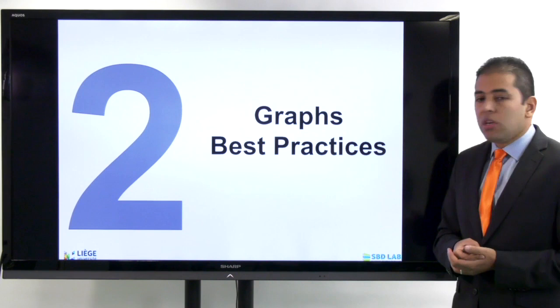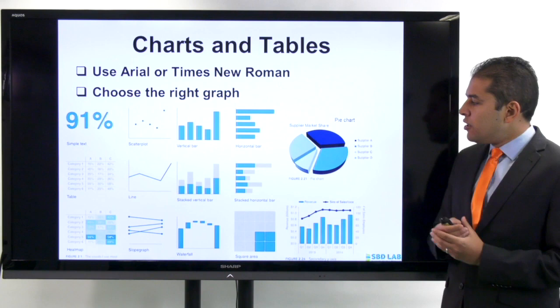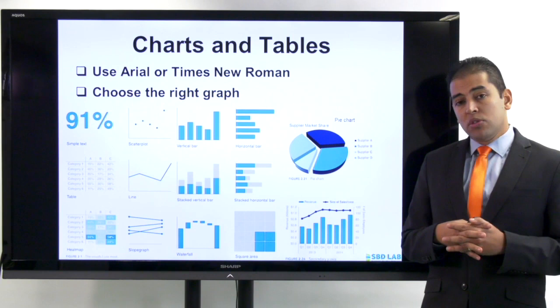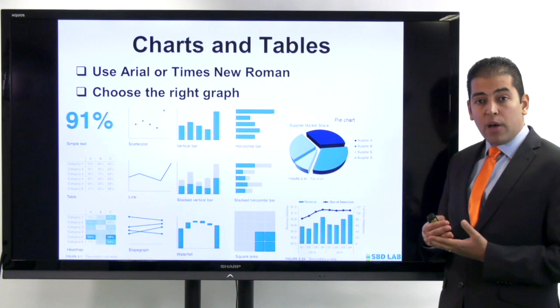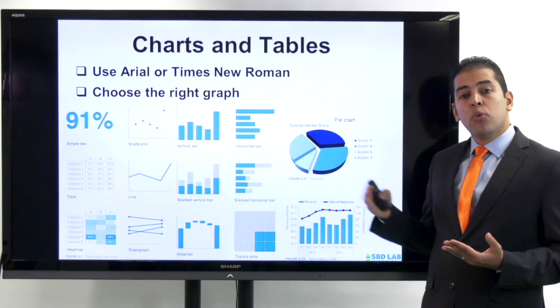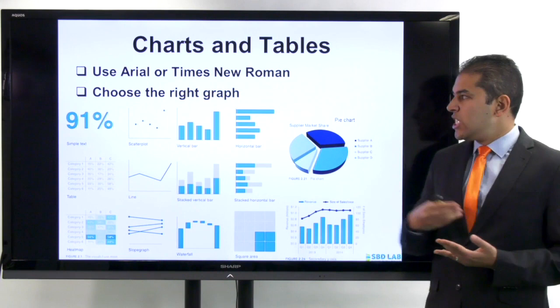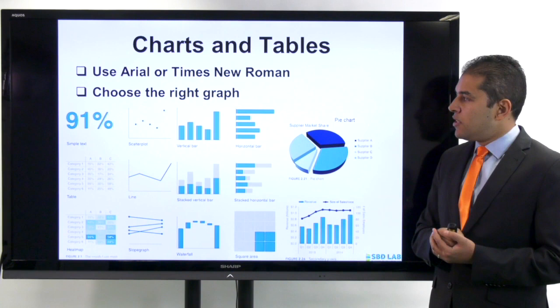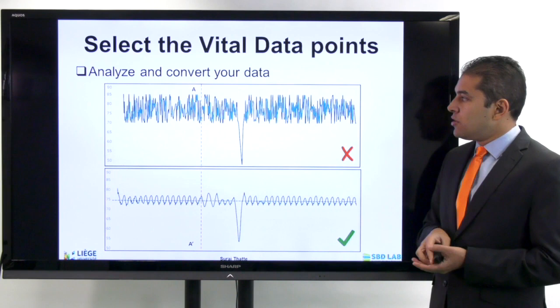What are the best practices when it comes to graphs? We try always to use Arial or Times New Roman — very classical fonts — to make sure that the text is readable and not biased, and we try to choose the right graph that corresponds to the data that we have. It's very important that you look in the beginning, when you start to investigate your results, at how you are going to visualize them. Always avoid using any arbitrary font — I advise Arial — and choose the right graph.